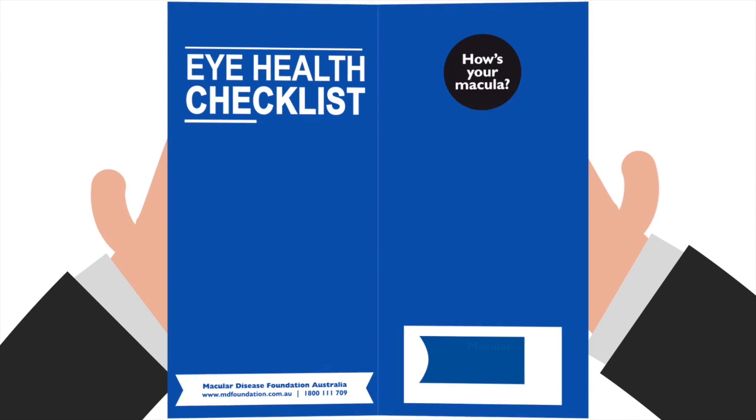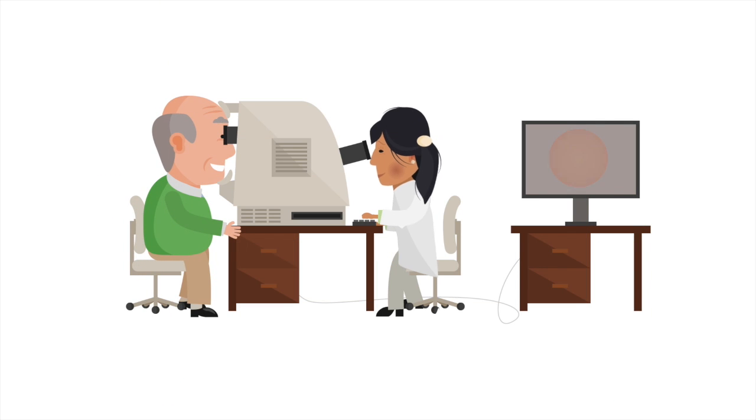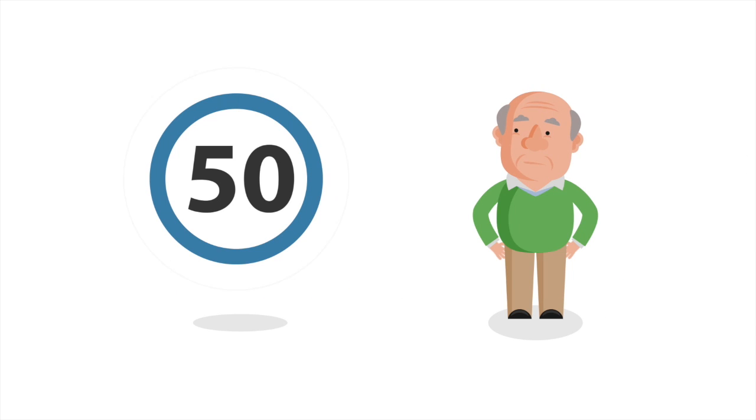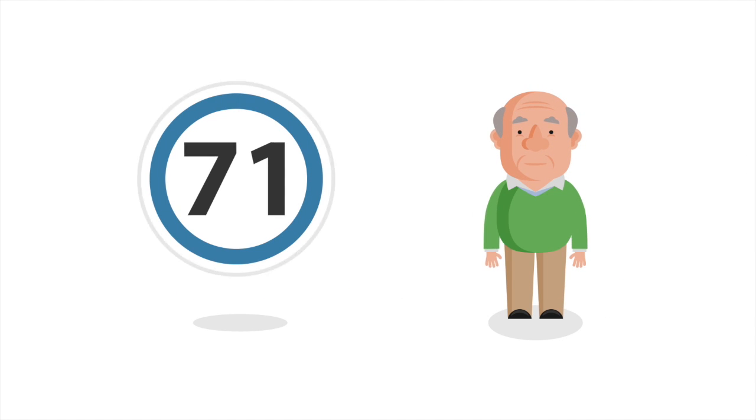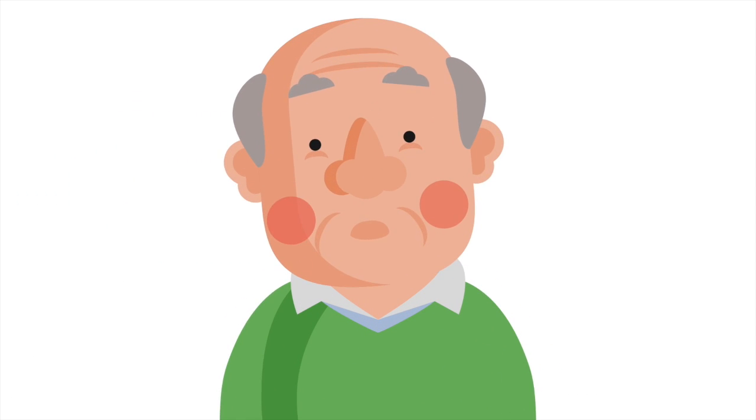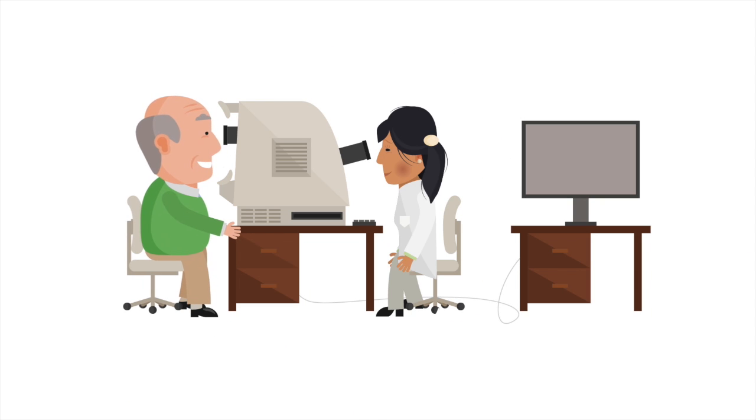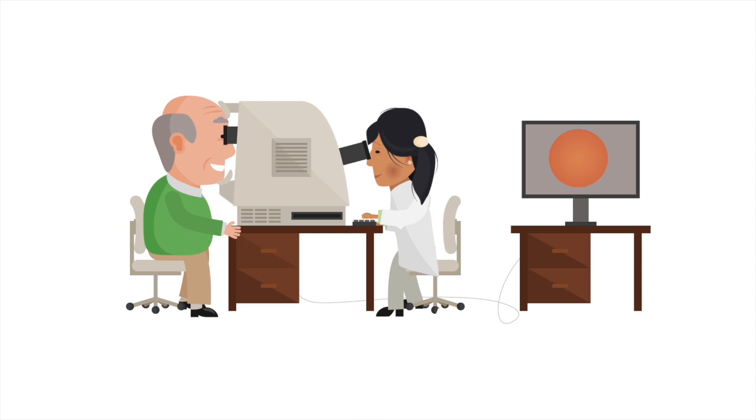That's why it's important to have an eye test and macular check by your optometrist or ophthalmologist. Especially if you're at risk, if you're over 50, if you have a direct family history, or if you smoke or have smoked. Special diagnostic equipment is used to look into the back of the eye and check the health of the macula.